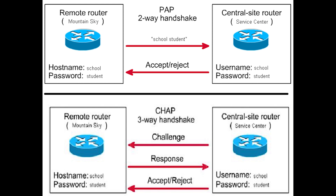First, the client sends credentials to the server, and in response, the server sends an encrypted challenge to the client. Number two, the client responds to the challenge with a hash by combining the password and the challenge. Number three, the server compares its database information, and if it matches, the user is authorized to communicate over the network.